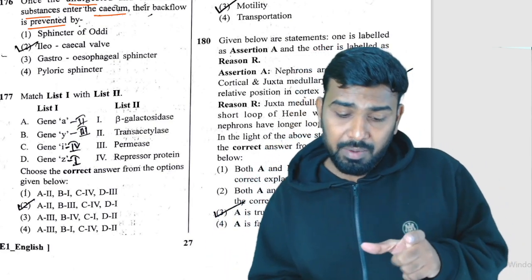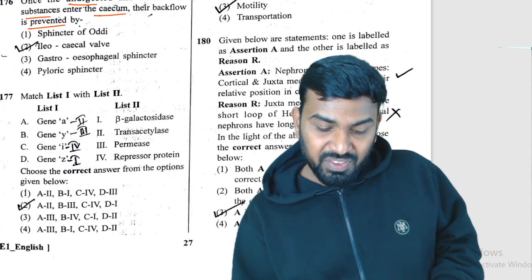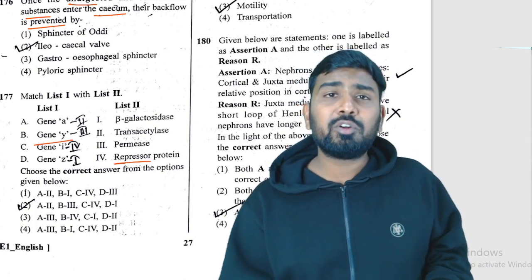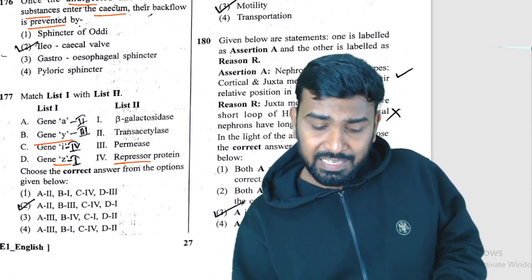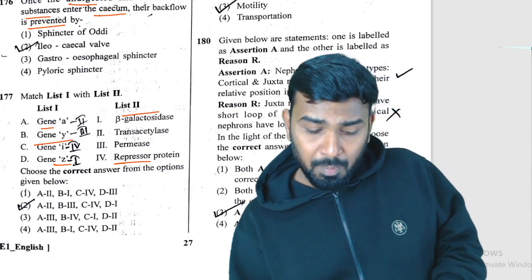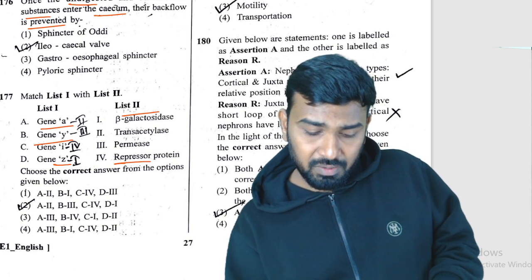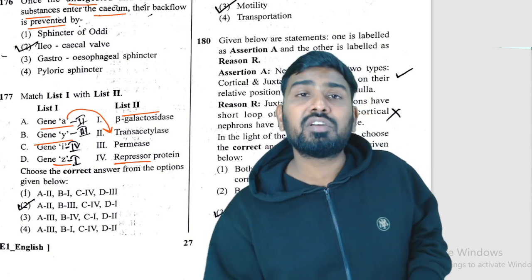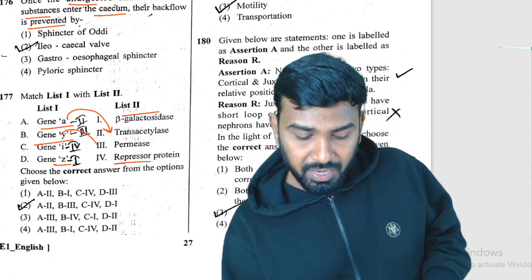Question 177 is about the lac operon. The i gene codes for the repressor protein. Gene z codes for beta-galactosidase. Gene y codes for permease. Gene a codes for transacetylase. So: z-beta galactosidase, y-permease, a-transacetylase. Direct NCERT figure-based question.